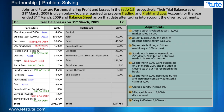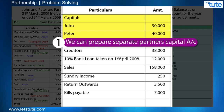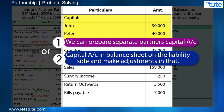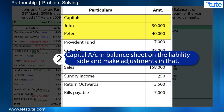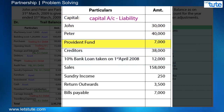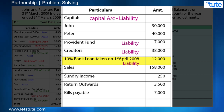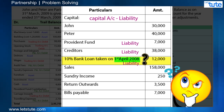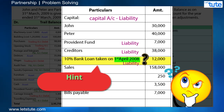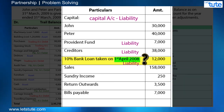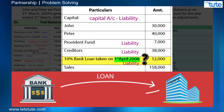Moving on to the credit side: for capital, there are two options — we can prepare separate partners' capital accounts as done in the previous question, or we can write capital accounts in the balance sheet on the liability side and make adjustments there. In this question, we will write capital accounts on the liability side. Going ahead, provident fund and creditors are liabilities. For the 10% bank loan taken on 1st April 2008, this will go on the liability side — but why has the date been provided? There is a hidden adjustment in this item.